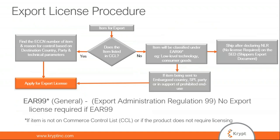The steps for applying an export license: first, search whether the item is listed in the Commerce Control List (CCL). If listed, find the ECCN number and the reason for control based on destination country, party, and technical parameters. If the item is not listed, you can classify it as EAR99 — no license required (NLR) — and ship the product. However, even if the item is not listed in CCL, if you are shipping to an embargoed country, an SPL party, or a prohibited end use, you must apply for an export license.